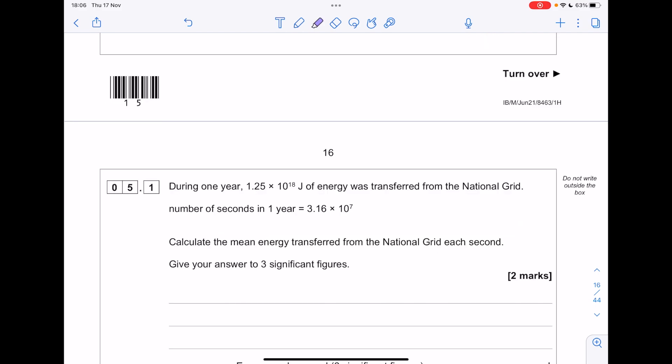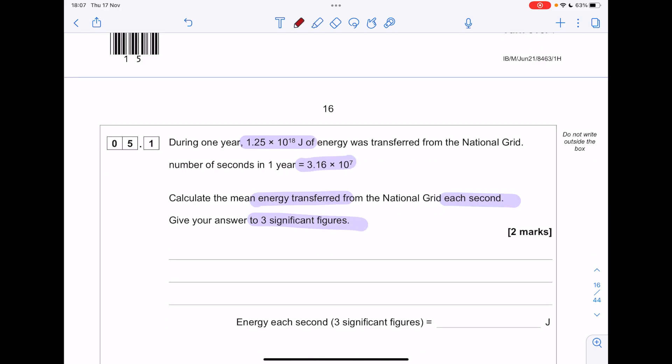During one year, 1.25 times 10 to the 18 joules of energy was transferred the number of seconds in a year. Thank you for telling us that. Calculate the mean energy transferred each second. Give your answer to three significant figures. So we need to take that energy value and divide it by the number of seconds in a year.